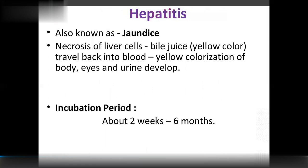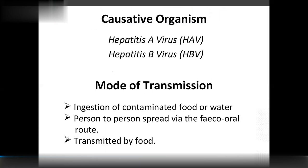Hepatitis, also called jaundice, involves damage to liver cells. Bile juice enters the blood, causing yellowing of the body and urine. Incubation period is 2 weeks to 6 months. Causative organisms are Hepatitis A virus and Hepatitis B virus.